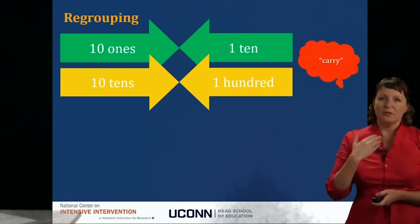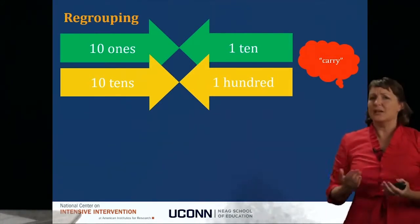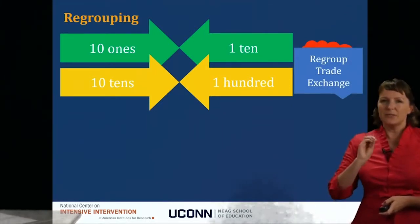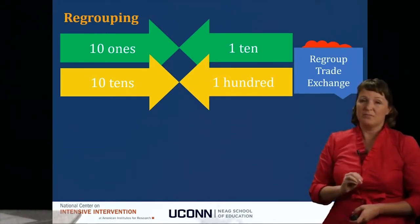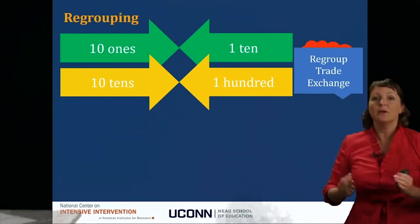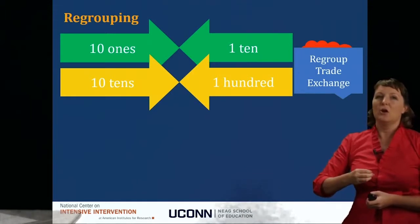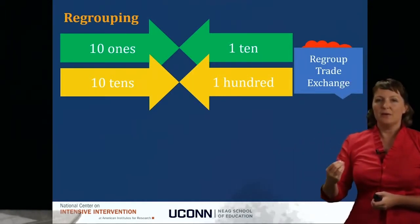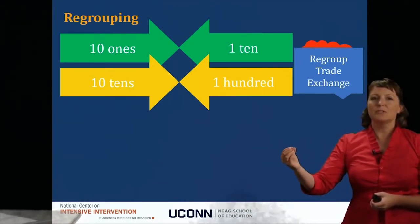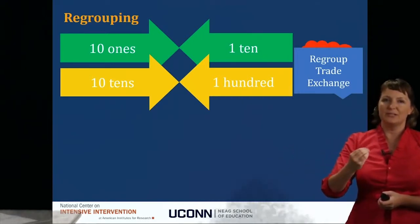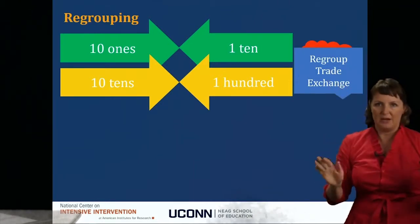When I was in school, I learned the term 'carry,' but that's really just a procedural term that doesn't tell us about the mathematics. These days, teachers need to use one of three terms: regroup, trade, or exchange. So instead of 'carry 10 ones for 1 ten,' say 'I regroup 10 ones for 1 ten,' or 'I trade 10 ones for 1 ten,' or 'I exchange 10 ones for 1 ten.' Those terms are more conceptually based.